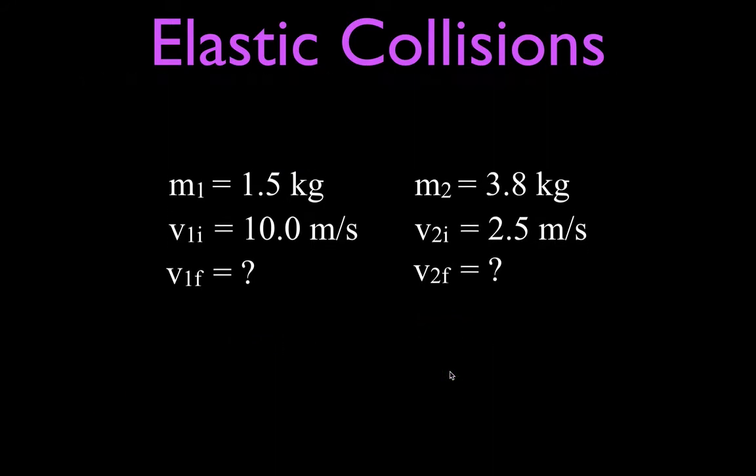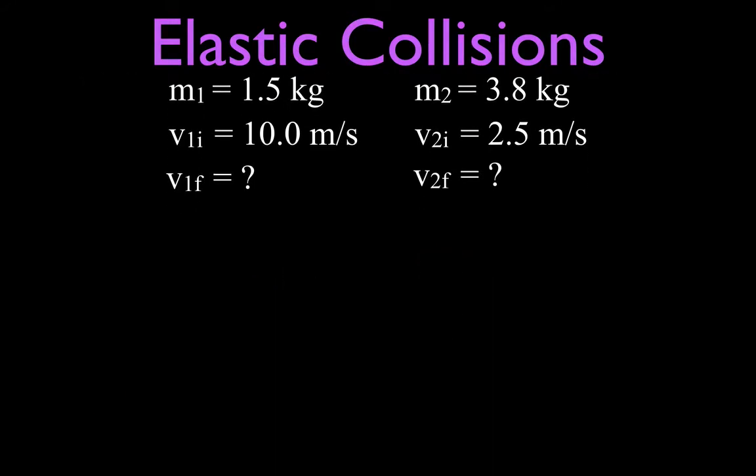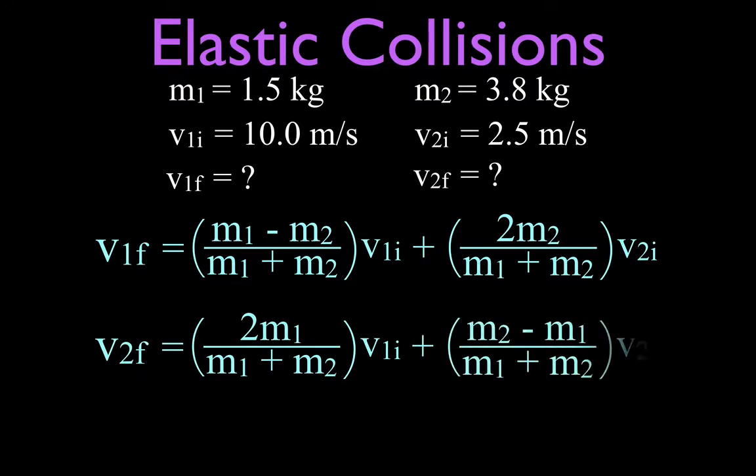So we're just going to take our information with us to the next page here and we are going to get out the equation. These are just simply the equations we use to calculate the final velocity of mass number one and the final velocity of mass number two. The equations look a little complicated maybe but it's just simply either adding or subtracting the masses and multiplying times initial velocity. Then we have 2m and all that other kind of stuff and multiplying by the initial velocity of mass number two.